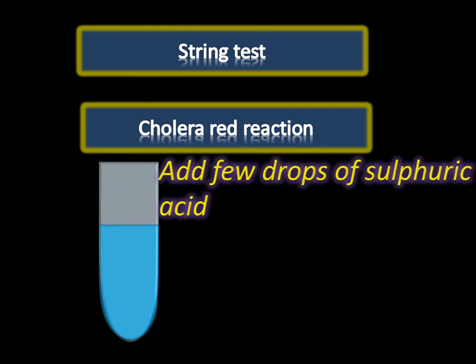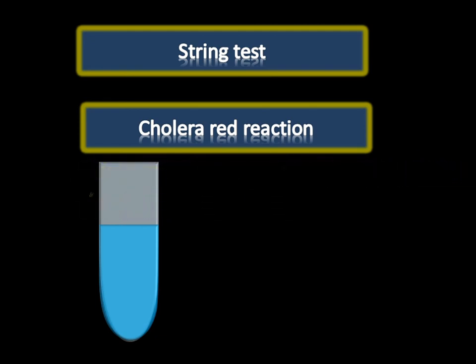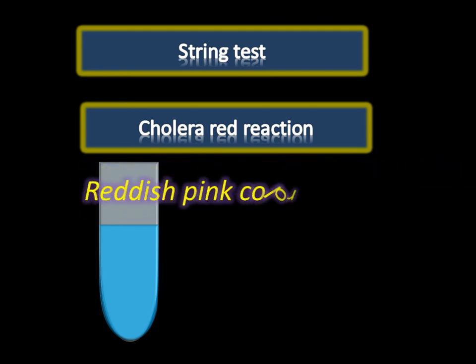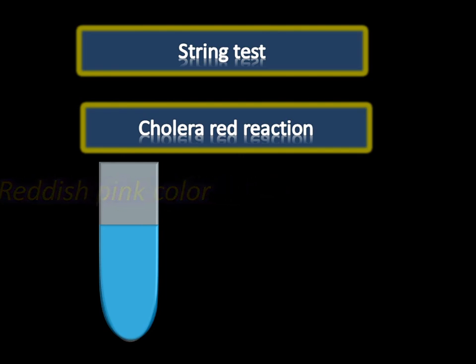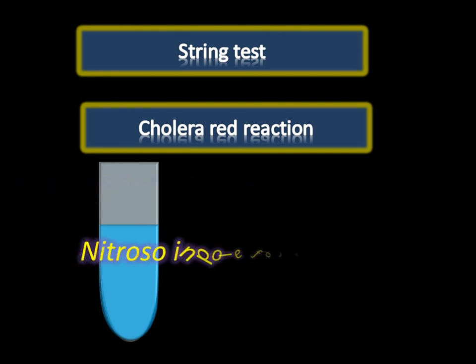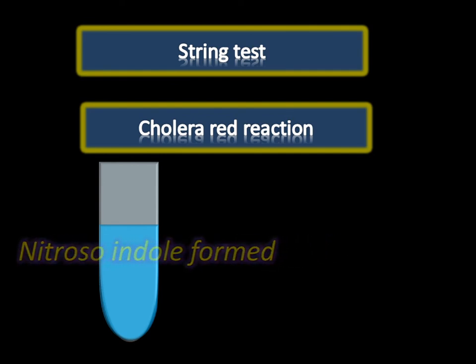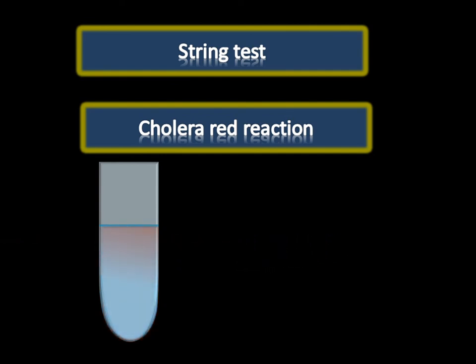Another test that helps in the diagnosis of Vibrio cholerae is the cholera red reaction. A four-day-old culture of Vibrio cholerae in peptone water is taken, and a few drops of concentrated sulfuric acid are added. The formation of nitrosoindole gives a reddish-pink color, indicating a positive test. This reaction is called the cholera red reaction.